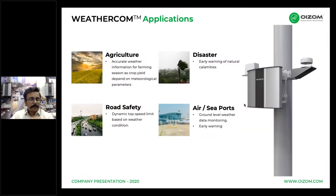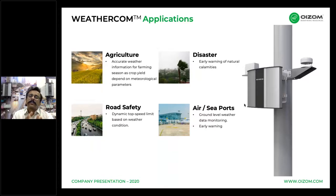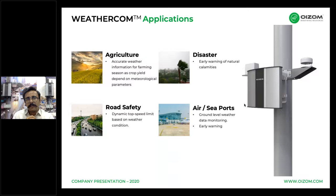WeatherCom data is helpful for taking preventive actions during calamities and forecasting events. Along with precision agriculture, it helps in taking data-driven decisions to save crops. Visibility is increasingly important for road safety — road accidents rank sixth in the list of causes of death — and dynamic speed limits or caution alerts for drivers can be implemented using WeatherCom data.